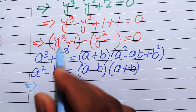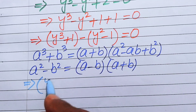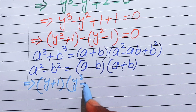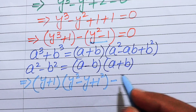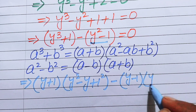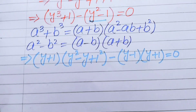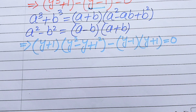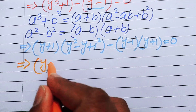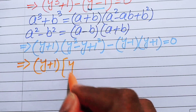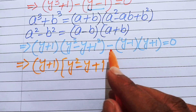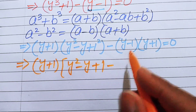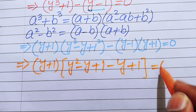Applying the cubic formula to the first factor gives y plus 1 times y squared minus y plus 1. Applying the square identity to the second factor gives y minus 1 times y plus 1. We notice that y plus 1 is a common factor, so we factor it out to get y plus 1 times y squared minus y plus 1, minus y plus 1, equals 0.